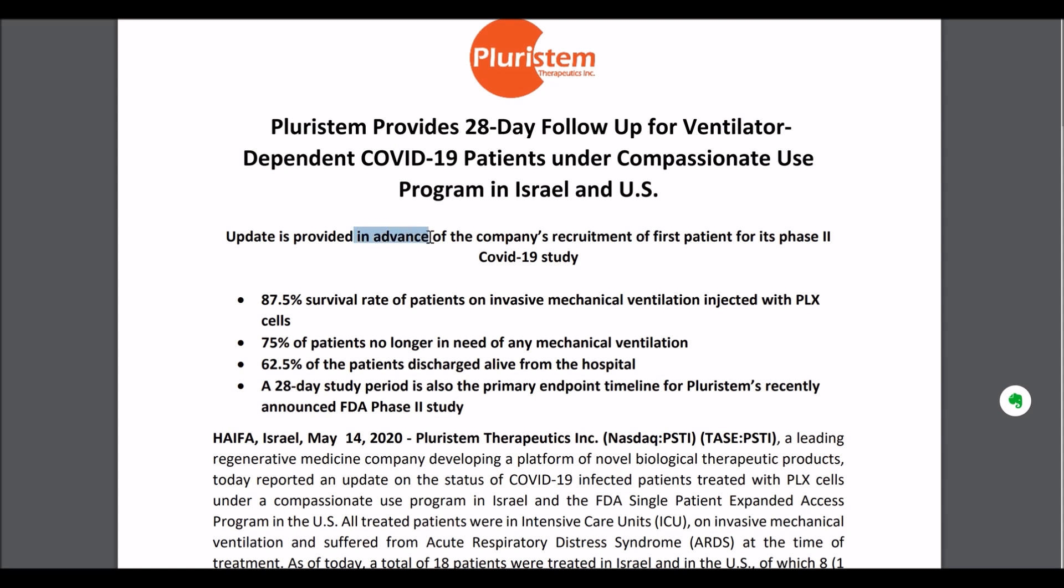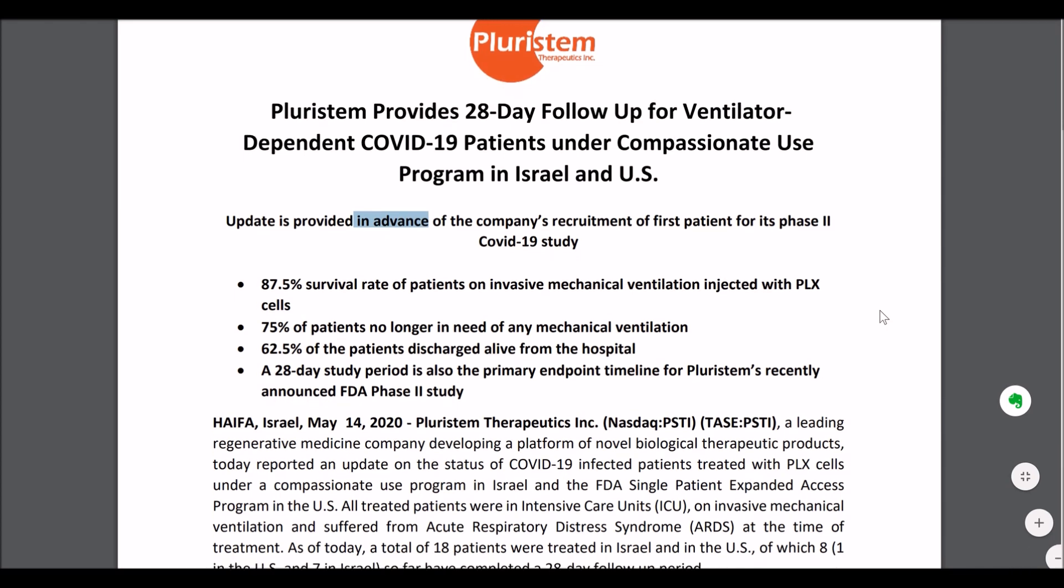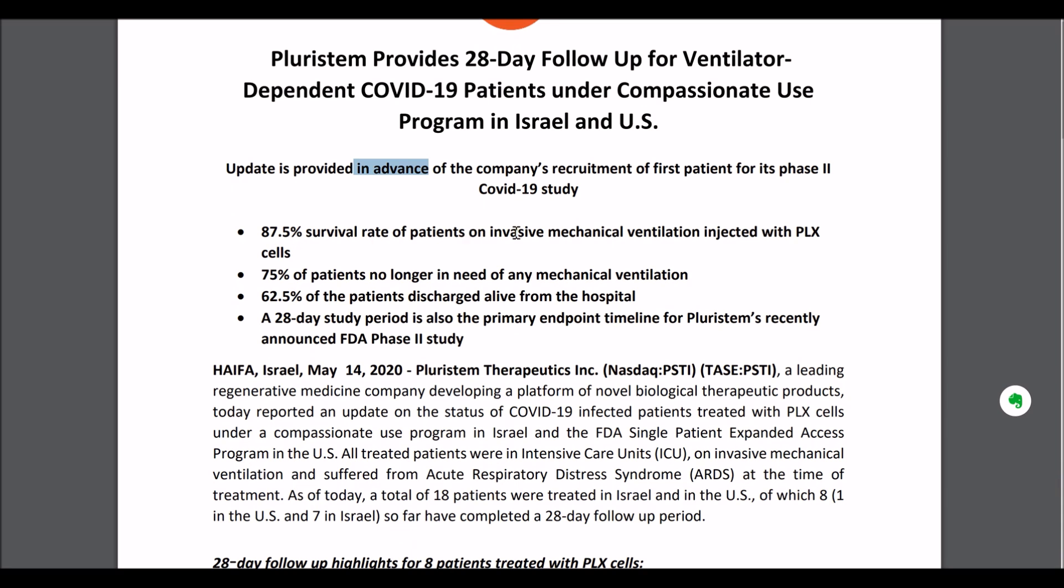Similarly to Athersys, they now have FDA approval to do a phase 2 trial in COVID-19 patients, but they've already used their PLX cells in a small cohort of patients. This was 18 patients total, and they have data from eight of them after a 28-day follow-up. 87.5% was the survival rate, with 75% of patients no longer needing mechanical ventilation. In this new trial, they're going to evaluate the efficacy and safety of one or two intramuscular injections in three different dosages of these PLX cells for the treatment of ARDS resulting from COVID-19.